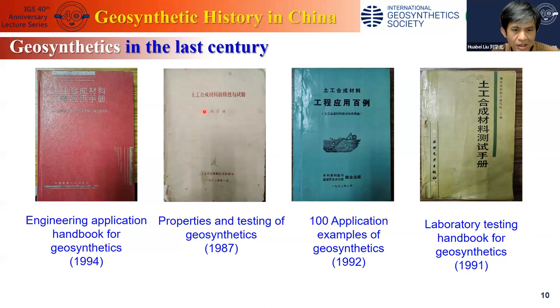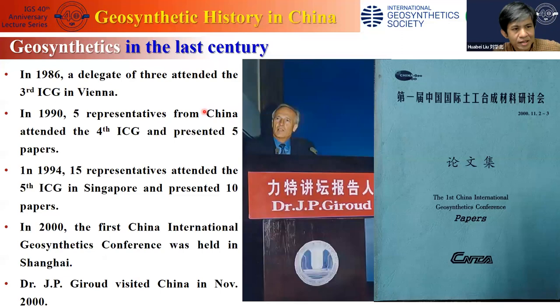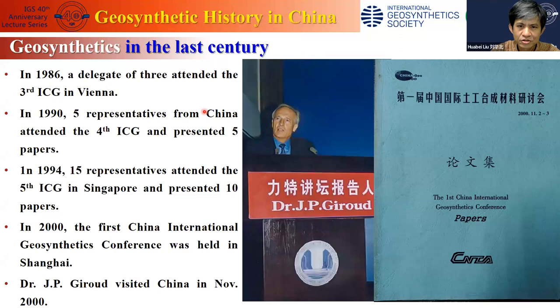In order to promote the technology, CTAG published several books in the last century. I would like to draw your attention to this book published in 1987 — it was the first one on properties and testing of geosynthetics in China. In terms of international collaboration, it started as early as 1986, when a delegation of three representatives attended the third ICG in Vienna. In 1990 and 1994, we also had representatives from China present more than 20 papers. In the year 2000, the first China International Geosynthetic Conference was held in Shanghai, and Dr. J.P. Zhuo visited China in November 2000.